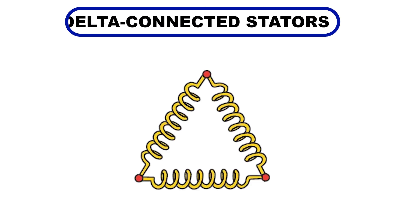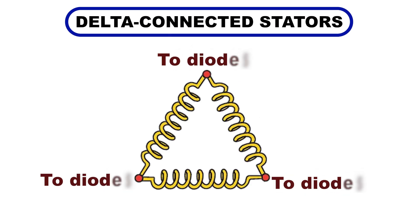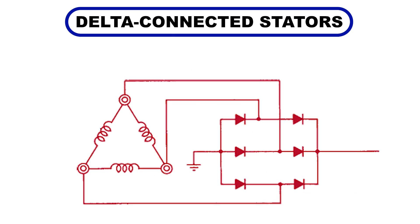Now, let's look at the delta winding. This configuration connects the windings in a triangular pattern, resembling the Greek letter delta. Unlike the Y configuration, delta windings form parallel circuits.